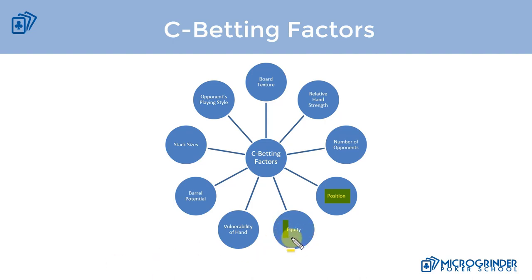Moving on to equity, which goes hand in hand with relative hand strength. Always consider the equity of your hand before betting. In our general c-betting strategy, we c-bet strong value hands and drawing hands on wet board textures because they both have a lot of equity compared to medium strength and weak hands. We don't want to be c-betting hands with very low equity. Generally, the higher the equity the more often we want to bet; the lower the equity, the more often we want to check.